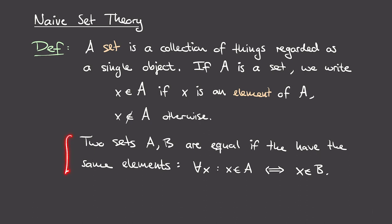We say what it means for two sets to be the same. Two sets A and B are considered to be equal if they have precisely the same elements. In logical formulas, we can write this as: for all elements x, x is an element of A precisely when x is an element of B. In other words, sets are purely determined by the elements they contain, so if two sets have the same elements, they are in fact the same set.